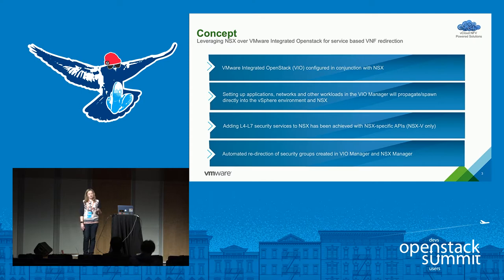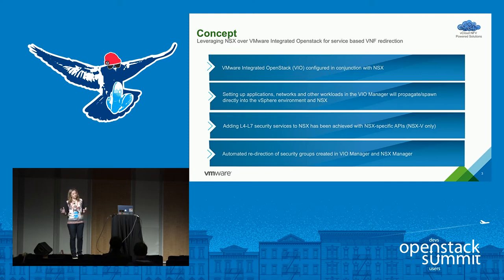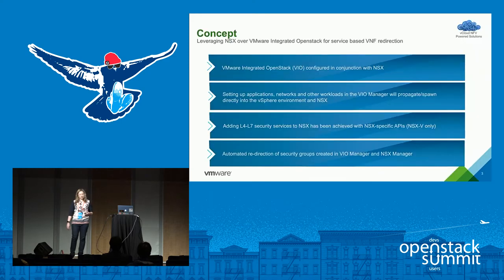What we hope to display today is VMware Integrated OpenStack configured in conjunction with NSX. We'll show how you can set up applications, networks, and other workloads using the VMware Integrated OpenStack Manager, and how those configurations will propagate into various other components so that you can use one single dashboard for configuration. Then we'll show adding Layer 4 to 7 security services and work with the NSX APIs to configure policy-based redirection.